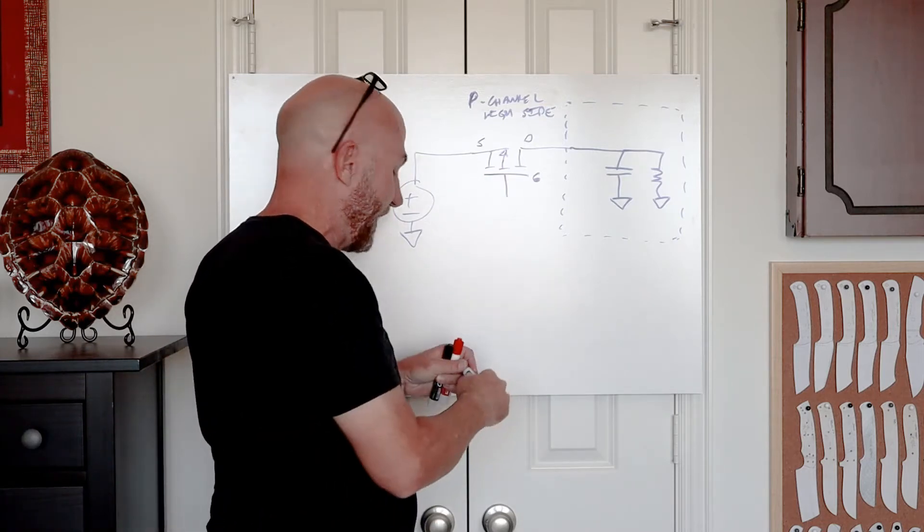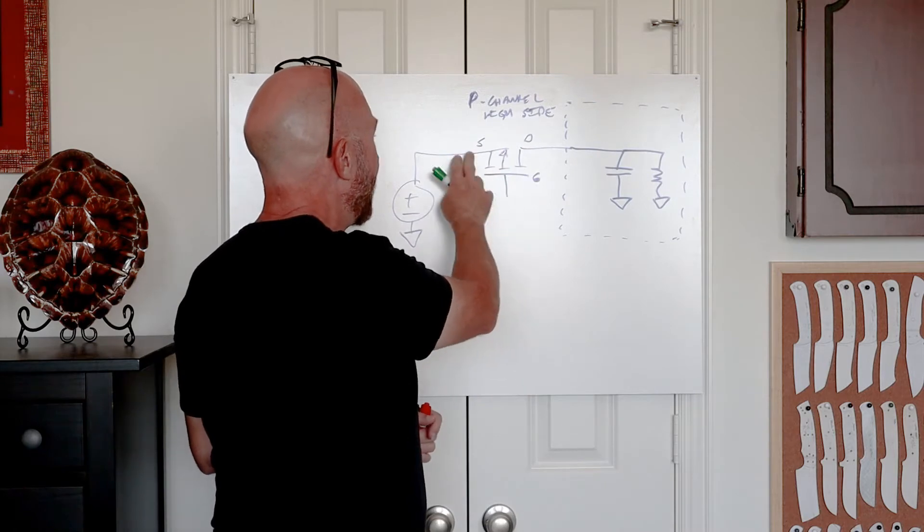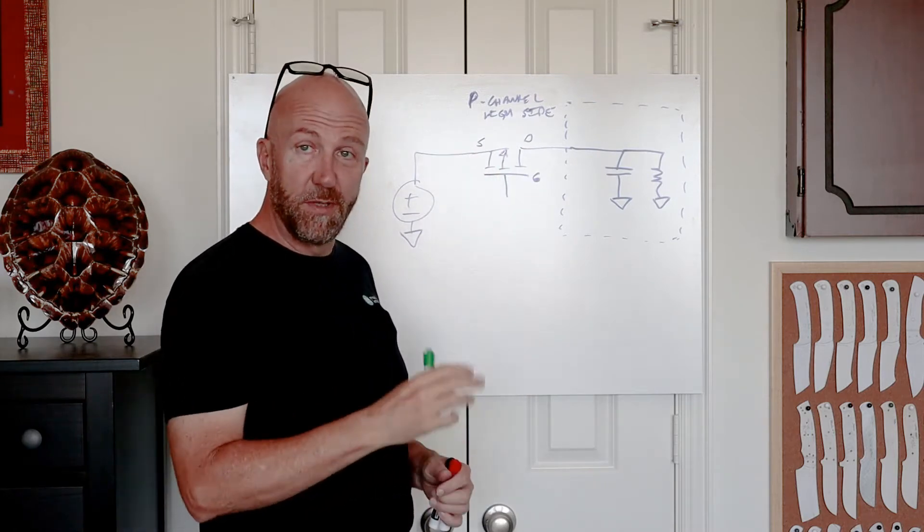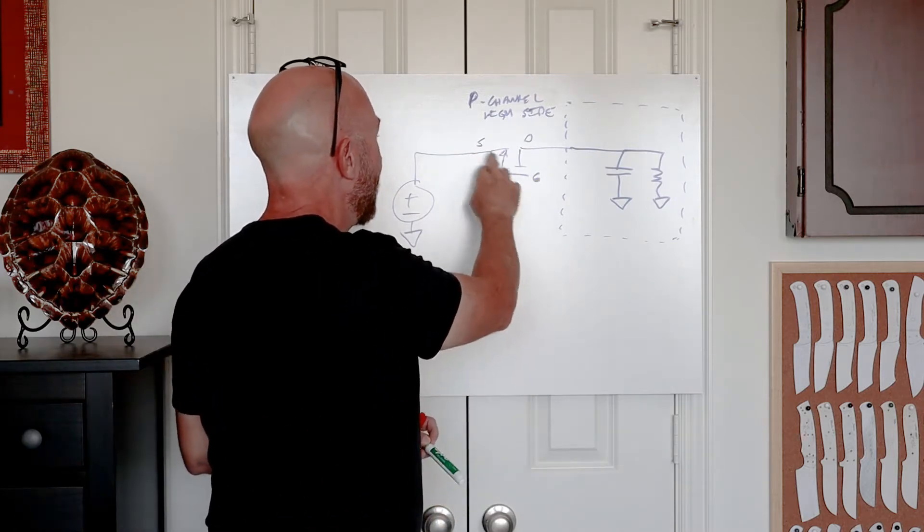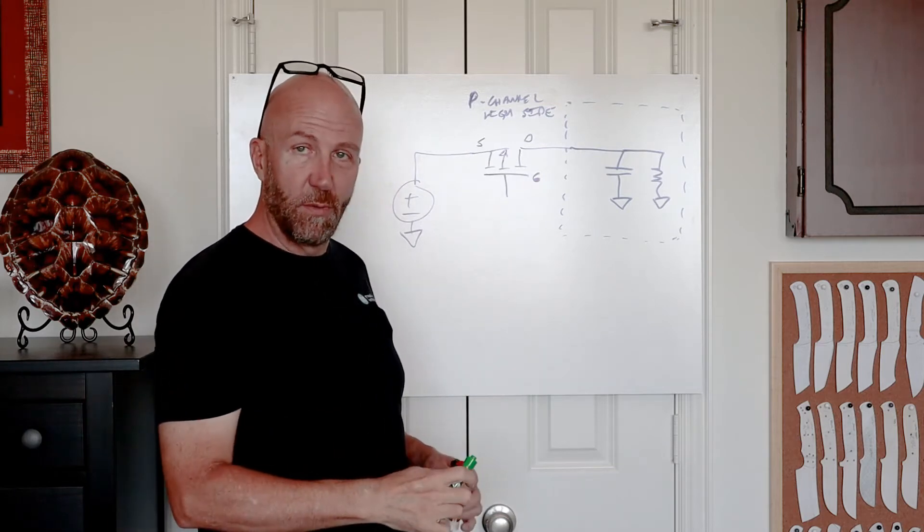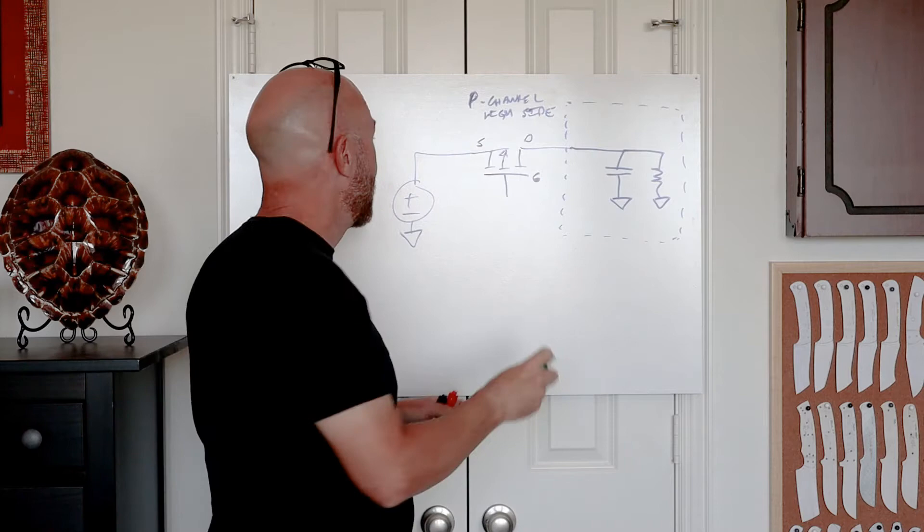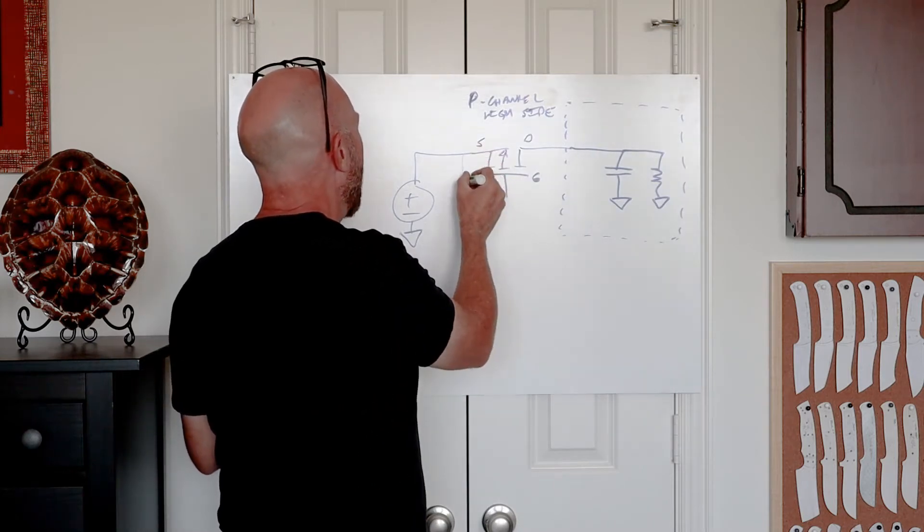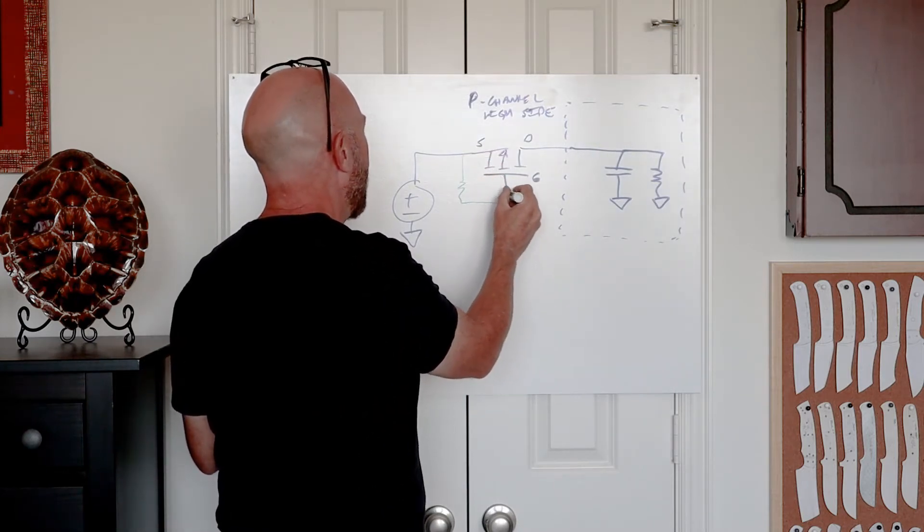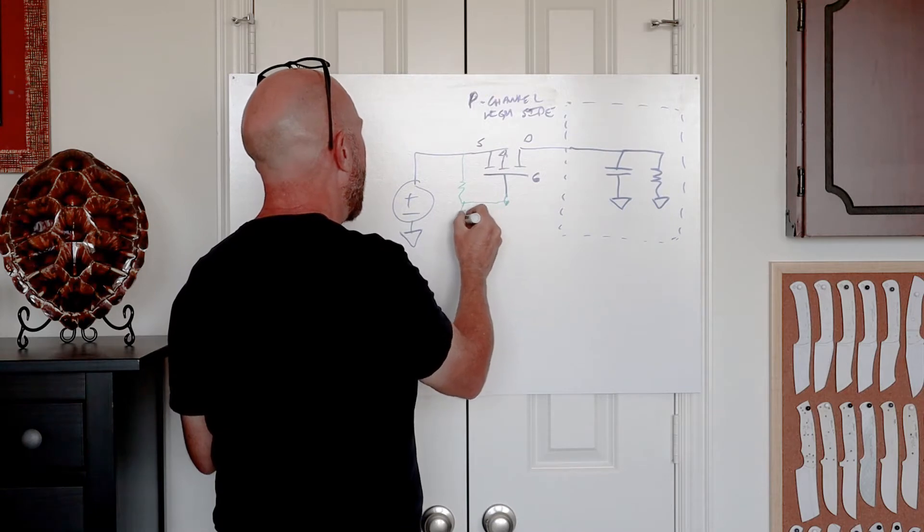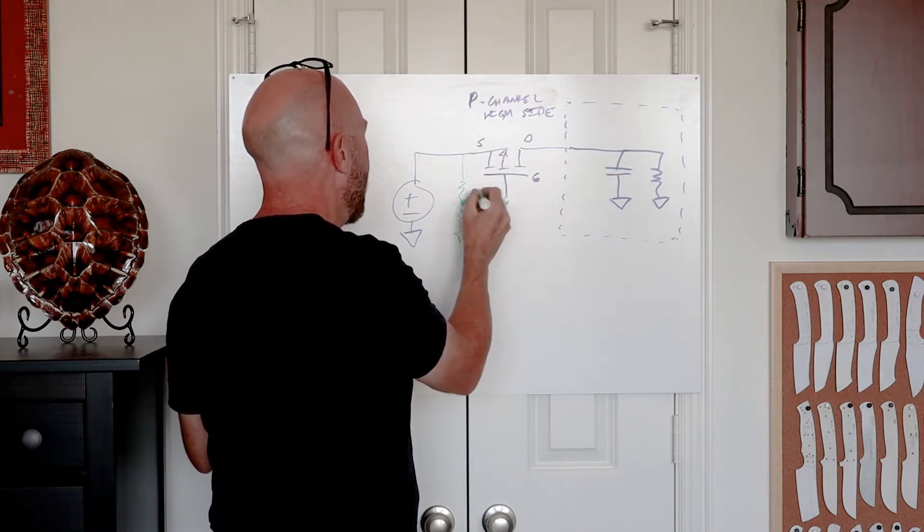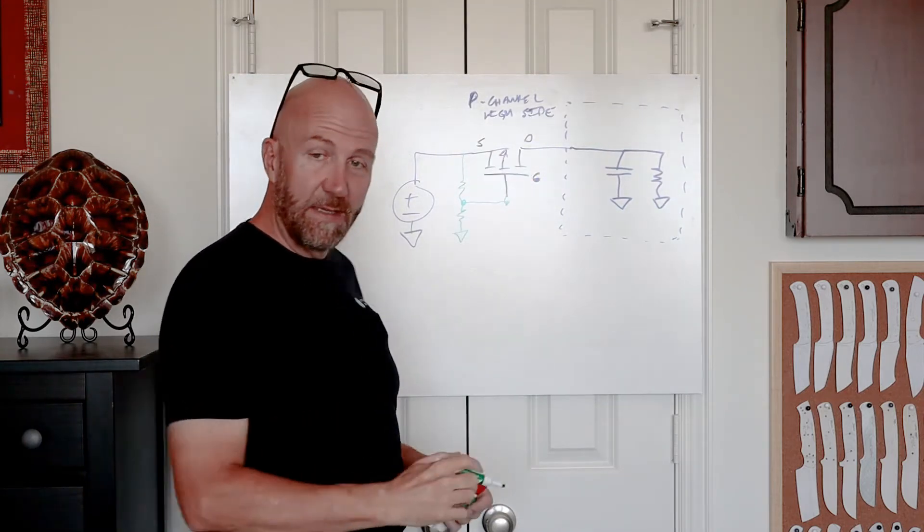In the p-channel case, we don't have to do that because we still have a gate-to-source voltage threshold to turn on the FET. But in this case, the gate goes low compared to the source. It has to be pulled below the source of the FET. And so what this means is that in the simplest circuit, we can just have a divider like this, and this would turn on our FET and give us a controlled gate voltage.